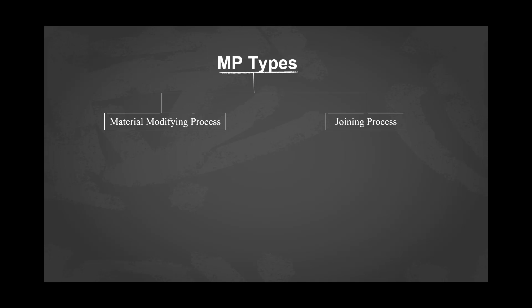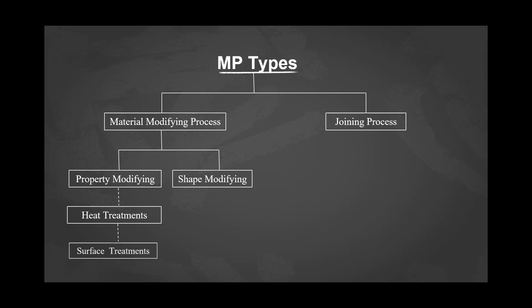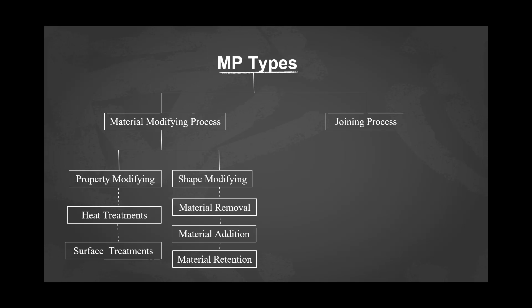The material modifying process either changes the properties of a material or the shape of a material, and is further divided into property modifying process and shape modifying process. Property modifying techniques include heat treatments and surface treatments, which can improve the performance and power of a material. Shape modification can be achieved by material removal, material addition, and material retention.